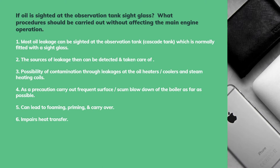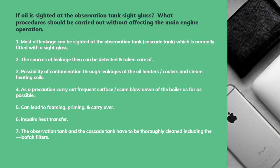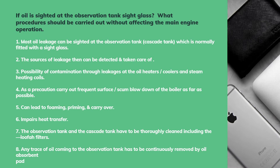Oil imposes on heat transfer if there is oil in the hot water system or in the boiler. The observation tank and the cascade tank have to be thoroughly cleaned, including the loofah filter — there is a filter inside that also needs to be cleaned. The tank drain and tank must be cleaned properly. Any traces of oil coming to the observation tank have to be continuously removed by oil-absorbent pads.